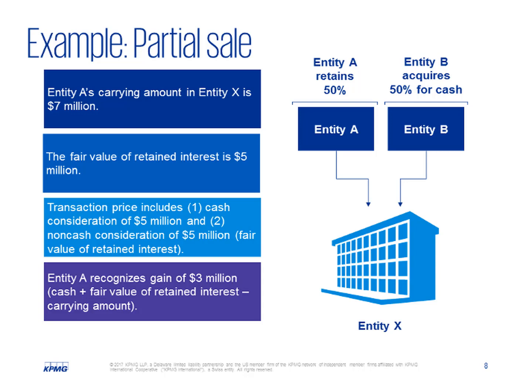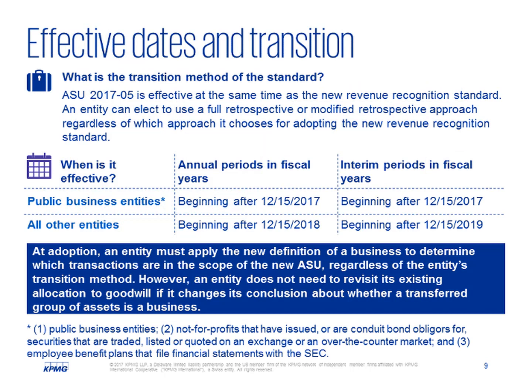With that, Bob, can you walk us through the effective date and transition of the standard? An entity is required to apply the amendments in this ASU at the same time that it applies the New Revenue Recognition Standard. However, the earliest an entity may apply the ASU or the New Revenue Recognition Standard is for annual and interim periods in fiscal years beginning after December 15, 2016. An entity can elect to use a full retrospective or modified retrospective approach regardless of which approach it chooses for adopting the New Revenue Recognition Standard. At adoption, an entity must apply the new definition of a business to determine which transactions are in the scope of the new ASU regardless of the entity's transition method. However, an entity does not need to revisit its existing allocation to goodwill if it changes its conclusion about whether a transferred group of assets is a business.